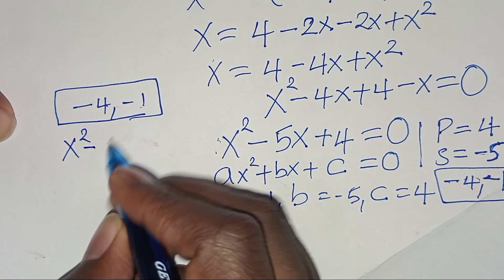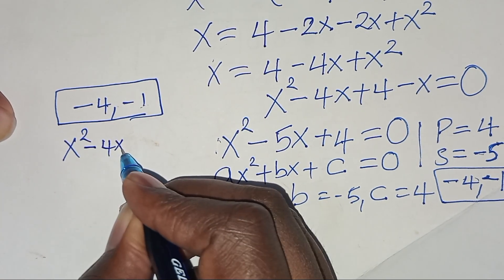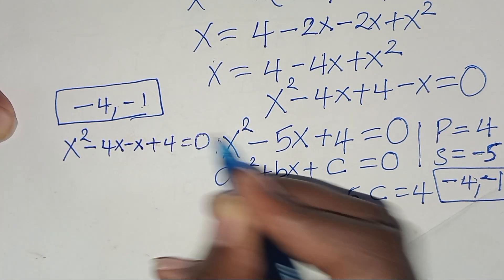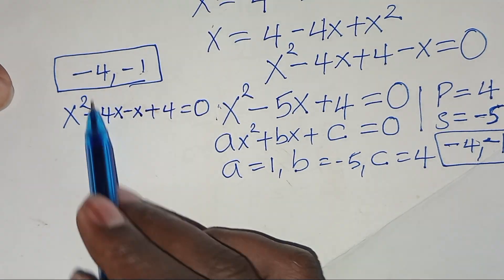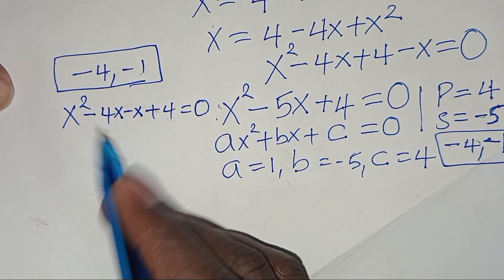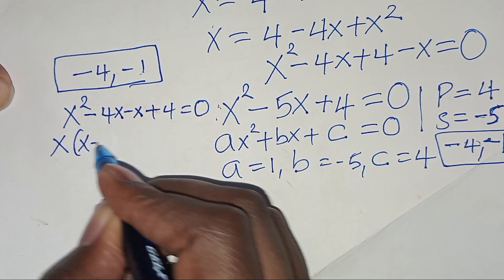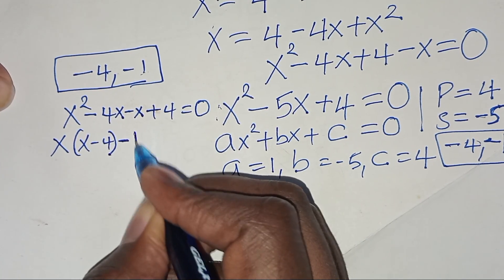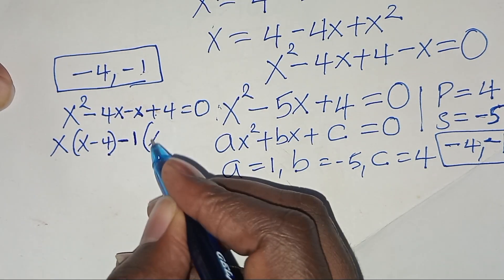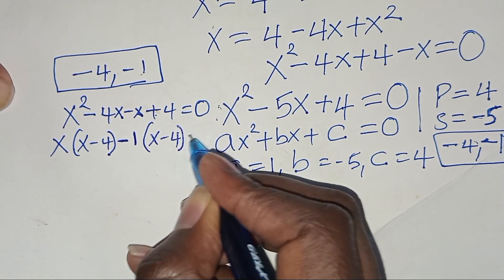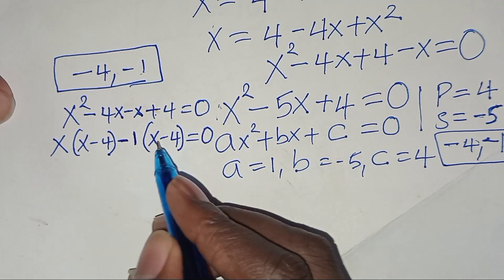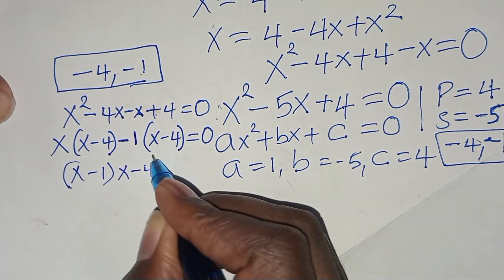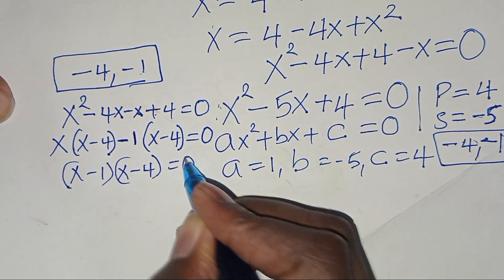Substituting, we have x squared minus 4x minus x plus 4 equals 0. Factoring: x(x minus 4) minus 1(x minus 4) equals 0, which gives (x minus 1)(x minus 4) equals 0.